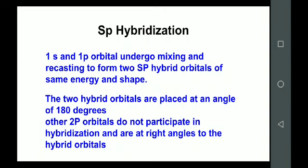The two hybrid orbitals are placed at an angle of 180 degrees. The hybrid orbitals orient themselves in space such that the newly formed orbitals are placed at the maximum distance from each other. That is why in sp hybridization, the two new hybrid orbitals are placed at maximum distance, resulting in an angle of 180 degrees between them.